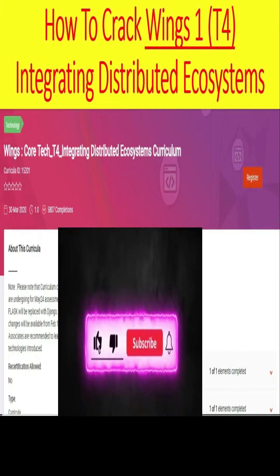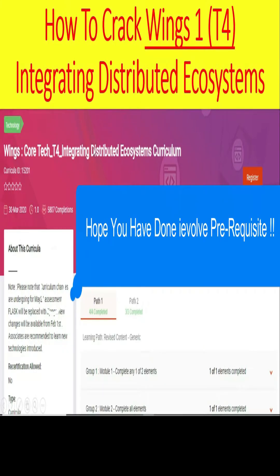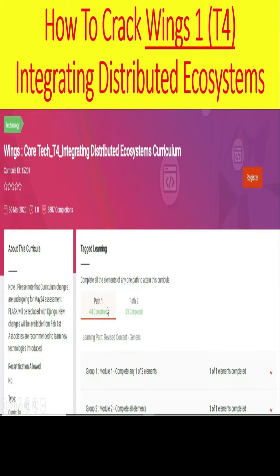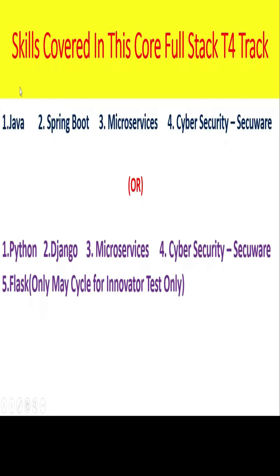Before starting the video, hit a like, subscribe and share. The curriculum ID is 15201. I hope you have already completed the prerequisite. You have chosen either Path 1 or Path 2 for the Skills covered in this Core Full Stack T4 track. Basically there are two choices: either you can go with Java or Python.